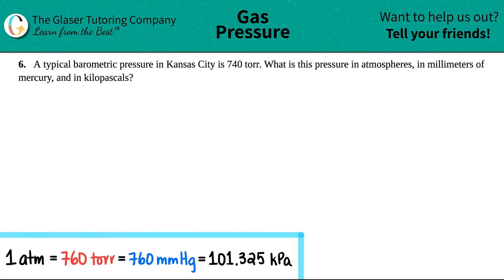Number six. A typical barometric pressure in Kansas City is 740 Torr. What is this pressure in atmospheres, in millimeters of mercury, and in kilopascals? Okay, so it looks like we're just taking one unit of pressure and converting it into all different types of pressure units.